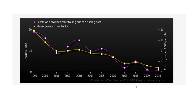In this video, I will show you some interesting correlation patterns between different variables or different events. The first one is people who drowned by falling out of a fishing boat and the marriage rate in a place. You can see there is a clear direct correlation.